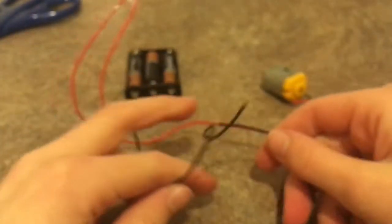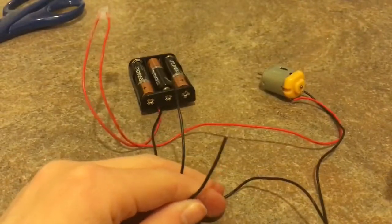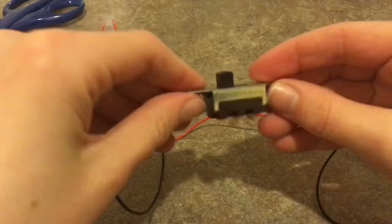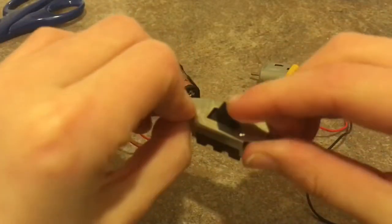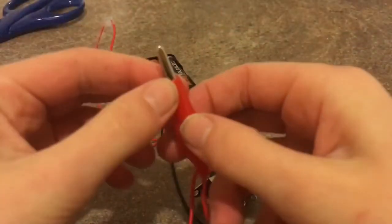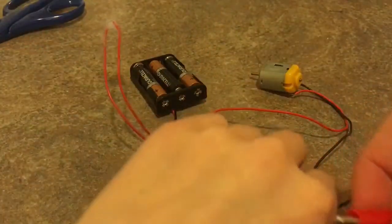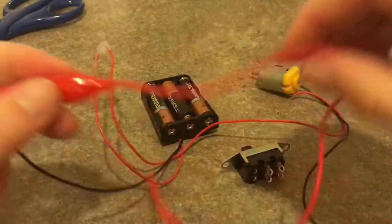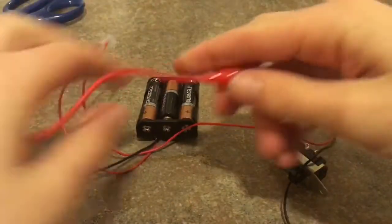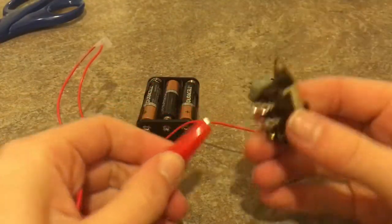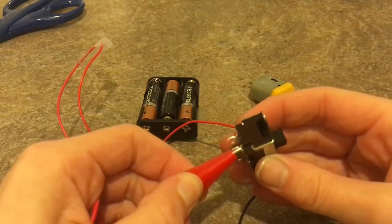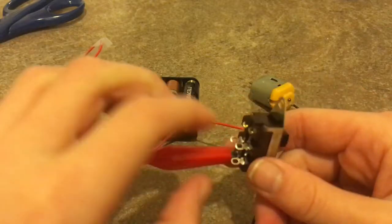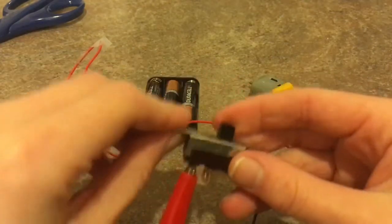Once you've done that, the red wires should be connected and you should have the two black wires exposed. Then what we're going to do is wire in the switch. To do that, we're going to use this alligator clip and just clip that onto the wire. Take the other end and clip it literally wherever you want on the switch. Oh, it does matter. It has to be on one of these loops.